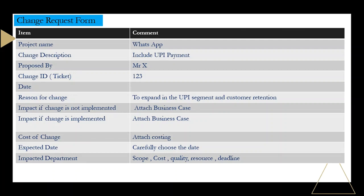Then you create a ticket — maybe a Jira article or something — where you can mention its ID and the date the change request was raised. The reason for change: why are you raising this change request? For example, I have written here: to expand in the UPI segment and for customer retention. Many people who want to make payments on WhatsApp will move to another application if UPI is not available. You want most of the people hooked up to your application only. That's the reason you suggest this change — to keep them engaged within WhatsApp itself.